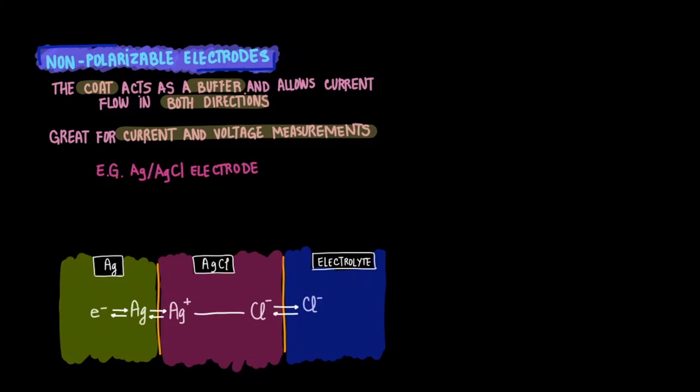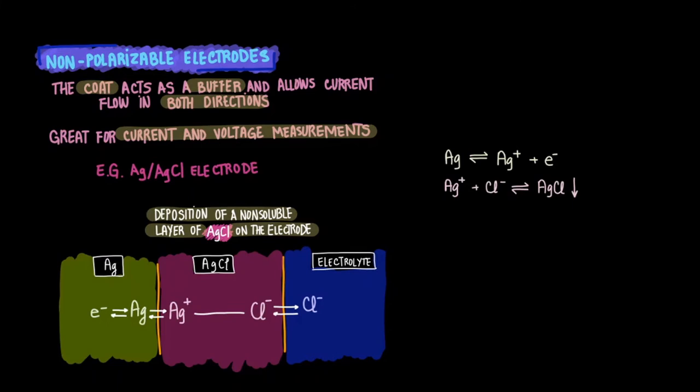So you end up depositing a non-soluble layer of silver chloride on the electrode. The coat of silver chloride really acts as a buffer. We can also easily take this current in both directions. We have a much larger supply of chloride in our bodies than silver. The reactions happening here are then first, the silver losing an electron and becoming a cation, and second, the silver cation bonding with the chloride anion to deposit silver chloride on the electrode. And notice that this buffer does not dissolve in solution.